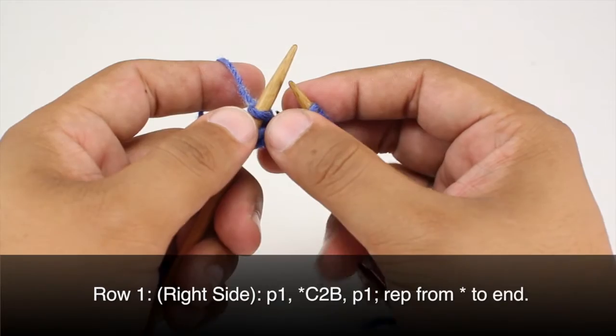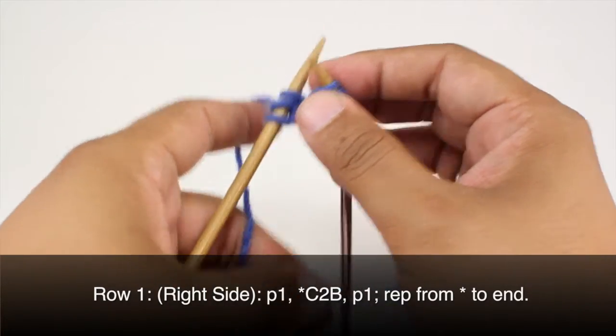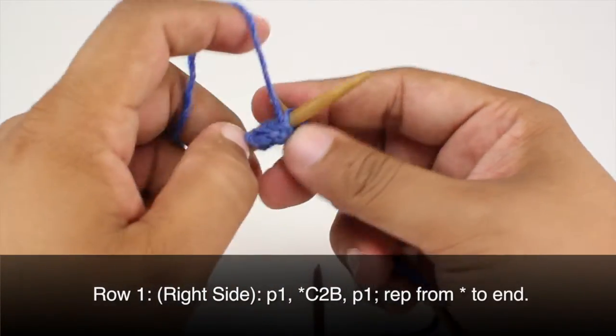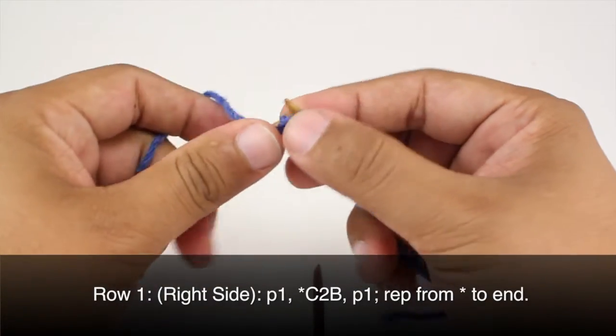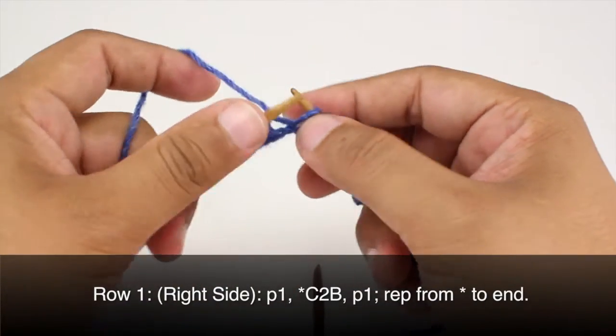Then we are going to continue our repeat by purling 1. So bring the yarn to the front and purl 1. And we're going to repeat this sequence all the way across. So we'll cable 2 back again.